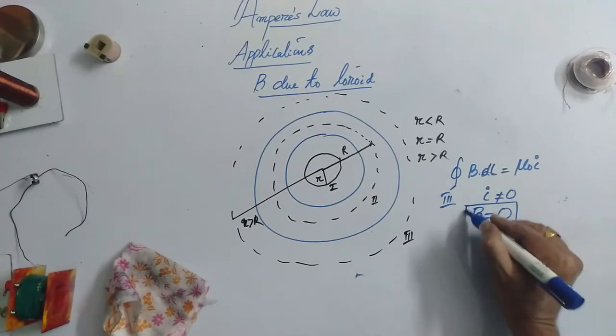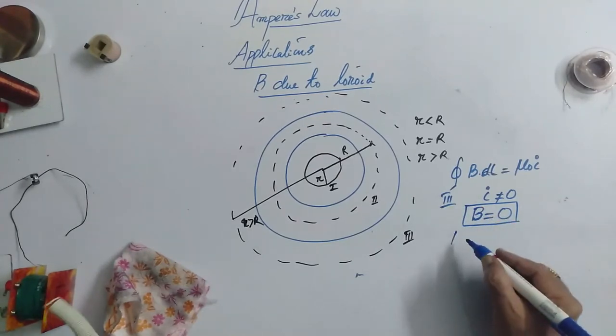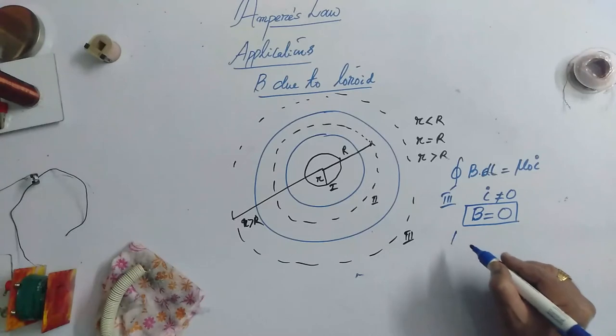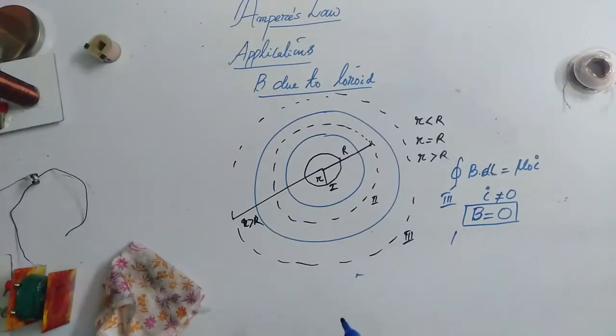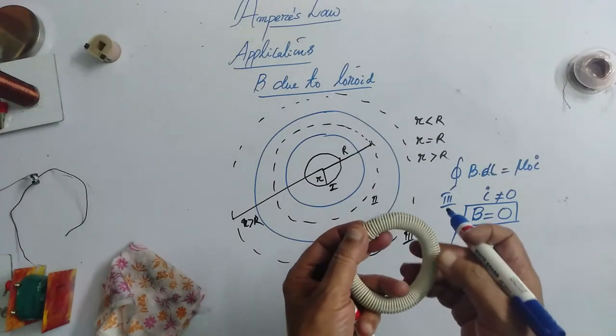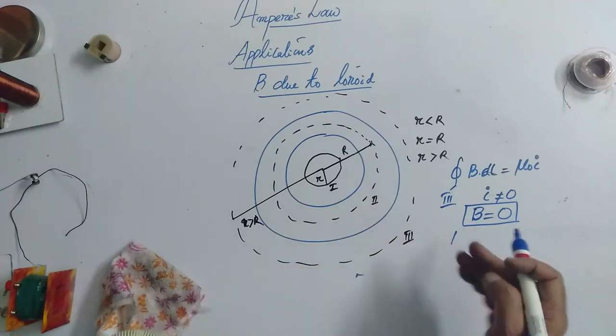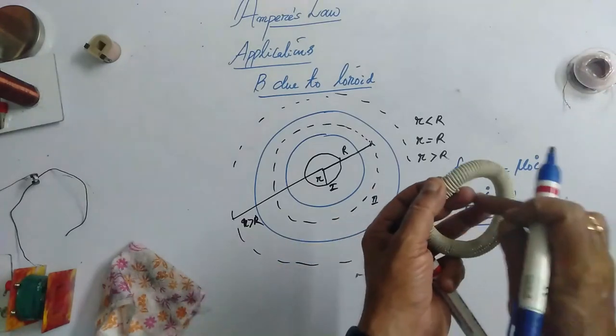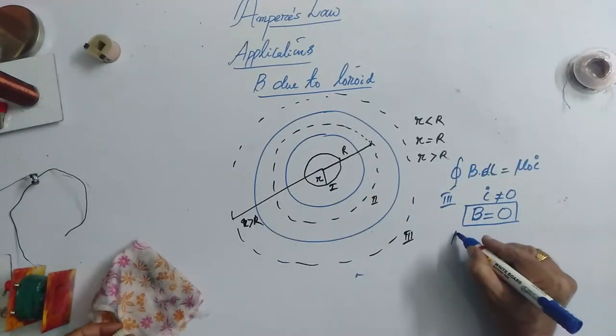Therefore, the net magnetic field because of this total sum of the currents going in is equal to going out, the magnetic field becomes 0. So, in this way, in the third loop also, it is 0. So, only in one loop, that is interior of this solenoid only, the magnetic field exists. Outside and this inner portion or outside portion, there will be no magnetic field.